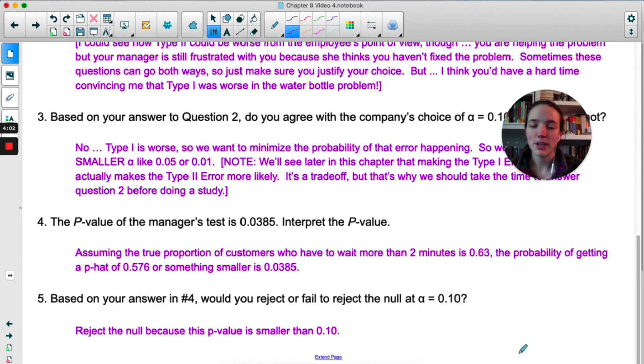Okay, so the p-value of the manager's test is 0.0385. If we're interpreting we could say assuming the true proportion of customers who have to wait more than two minutes is 0.63, so assuming the null is true, the probability of getting a p-hat of 0.576 or something smaller is 0.0385. Based on that we would reject the null because that is smaller than our significance level of 0.1. So if we did make a mistake it would be a Type 1 error because we're rejecting the null. If we're rejecting the null there's no way we're making a Type 2 error because a Type 2 error starts with us failing to reject the null. As I mentioned, the important part for now is identifying which error is which and identifying the consequences of each. We won't worry too much about the probabilities of these until the next video.